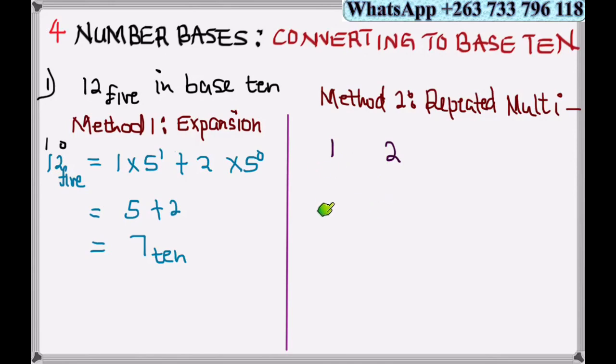You multiply and add, multiply and add repeatedly. In this case, 1 times 5 gives 5, then add 2. The 2 drops, and the next number will drop. The total here equals 7, and there's nothing more to multiply, so my answer is 7 base 10.